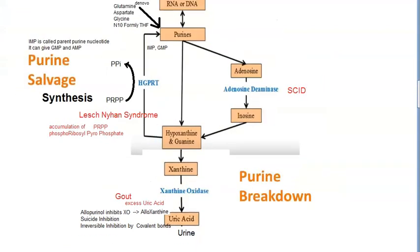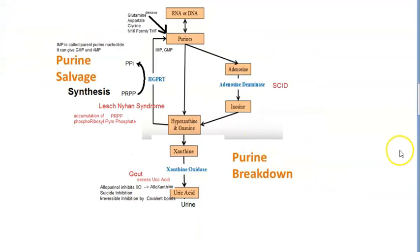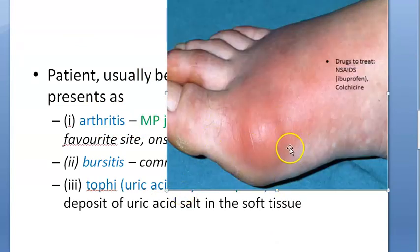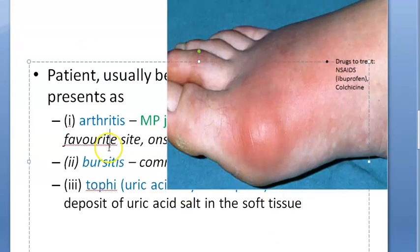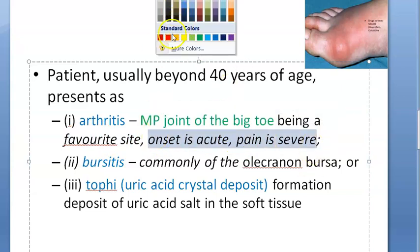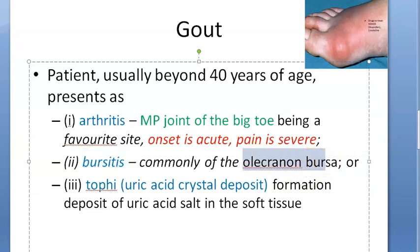Now let's look at clinical features. A patient will be beyond 40 years of age and will come with arthritis, bursitis, or tophi. Arthritis of the MP joint of the big toe is a very favorite site for gout. This will be acute in onset and severe in pain — sudden pain in that joint with no trauma.